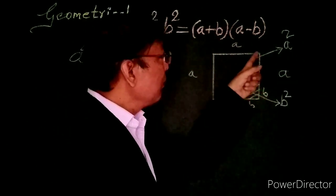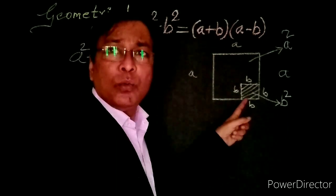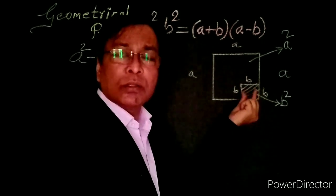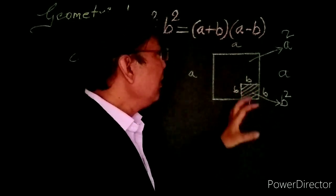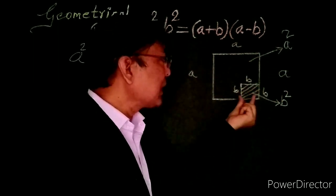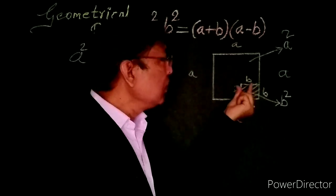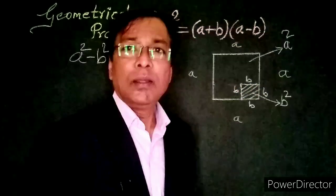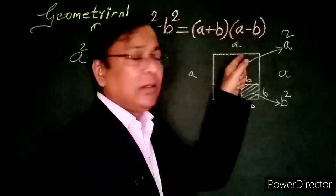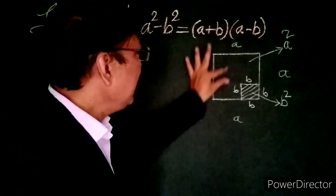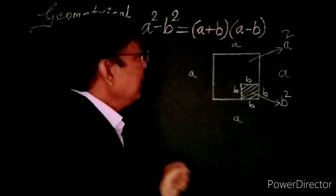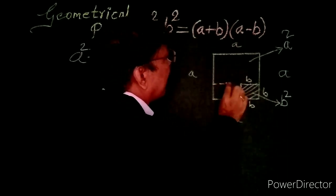That means from this big square, we are going to subtract this small square. In other words, from this big square that is a square, we are going to subtract this small square that is b square. Now we have subtracted b square from a square. This is the remaining area. We can find the remaining area by constructing two rectangles.